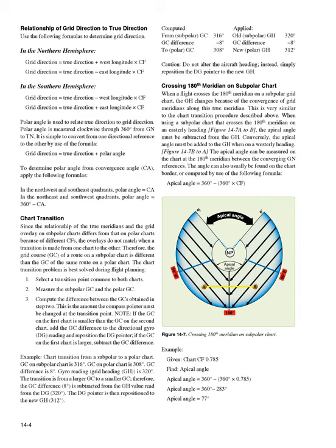Relationship of grid direction to true direction. Use the following formulas to determine grid direction. In the northern hemisphere: grid direction equals true direction plus west longitude times CF; grid direction equals true direction minus east longitude times CF. Polar angle is used to relate true direction to grid direction. Polar angle is measured clockwise through 360 degrees from GN to TN. It is simple to convert from one directional reference to the other using the formula: grid direction equals true direction plus polar angle. To determine polar angle from convergence angle (CA), apply the following: in the northwest and southeast quadrants, polar angle equals CA; in the northeast and southwest quadrants, polar angle equals 360 degrees minus CA.